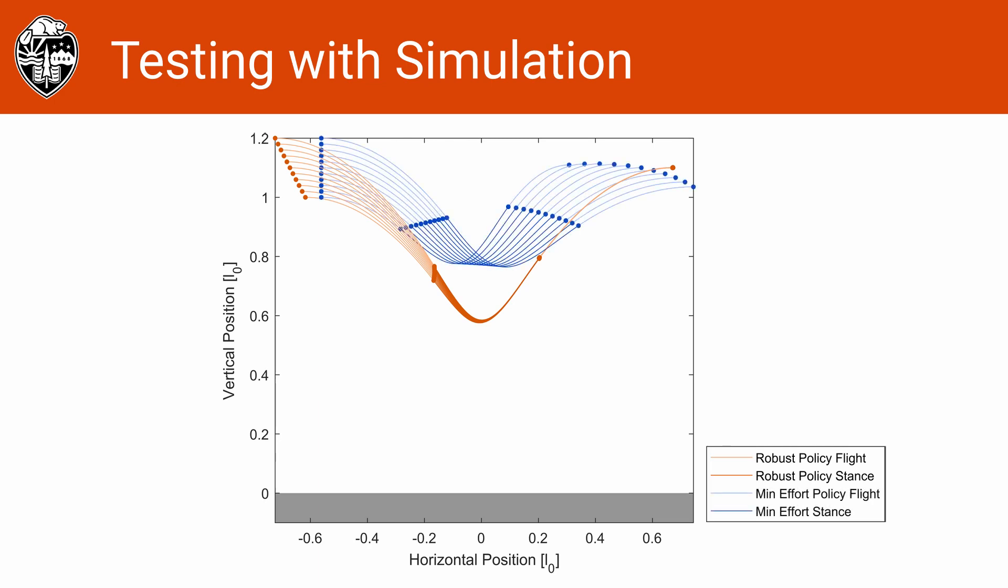Looking at the results of all the simulations, we observe that 14% of the disturbances caused the minimum acceleration policy to fail. This happened because the body contacted the ground before it reached the next apex state. None of the tested disturbances caused the robust policy to fail. When comparing the final state error of the conditions where the minimum acceleration policy didn't fail, the robust policy had on average 43 times less height error and 81 times less velocity error.